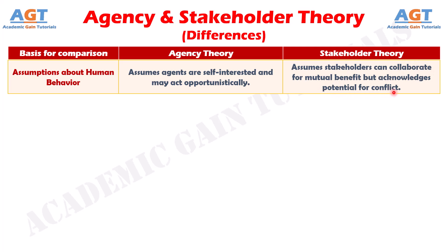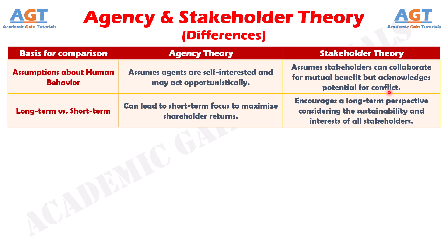And finally, difference number thirteen: agency theory may drive short-term strategies for quick financial gains, while stakeholder theory promotes long-term strategies for sustainable success.